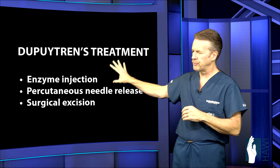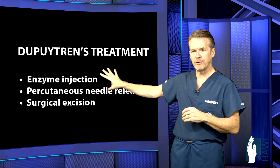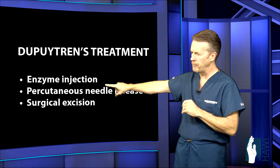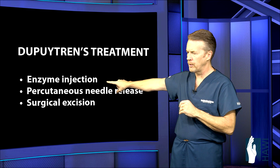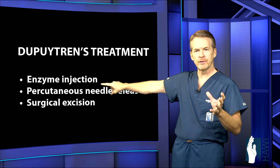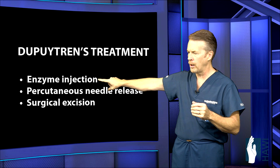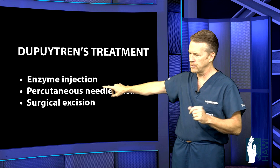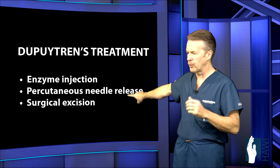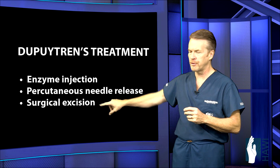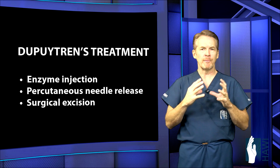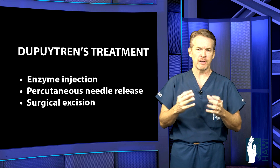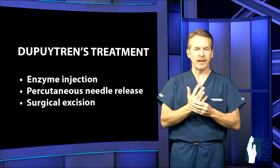Let's take a look now at the treatment for Dupuytren's disease. We're going to concentrate on the surgery aspect, but to mention, there are two other common treatments many surgeons may perform in the office: one is an enzyme injection that there are some indications for, and a percutaneous needle release. But today we're going to concentrate on what many surgeons still do today, and that's a surgical excision of this thickened fascia.